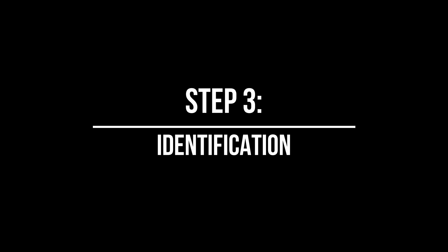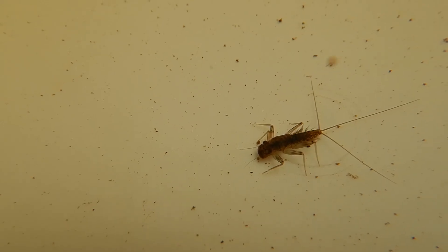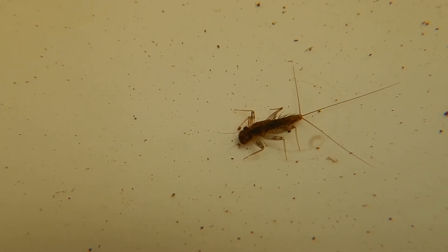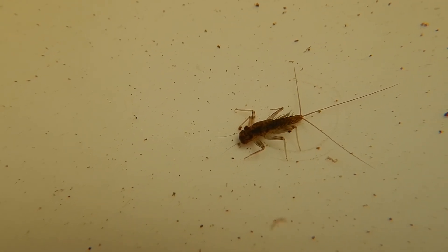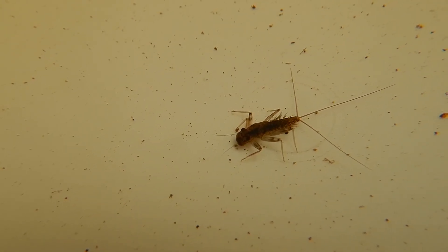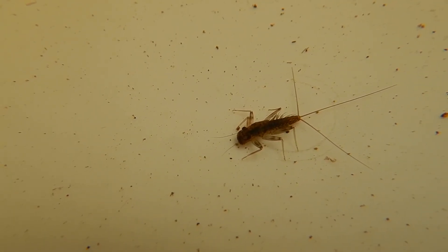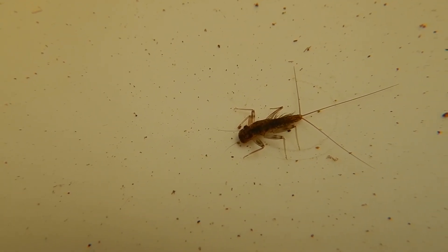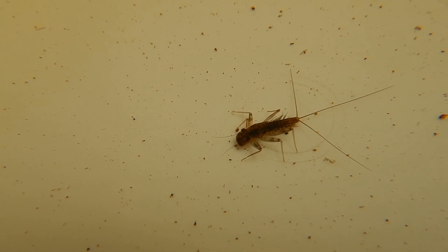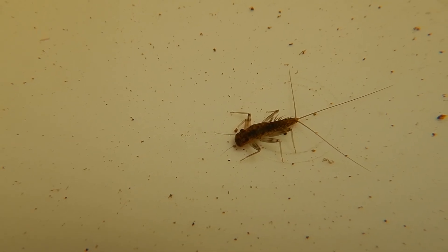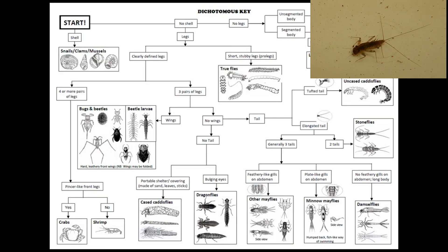Step 3: Identification. Now that we have our specimens, it is time to identify them. Select an invertebrate — for our purposes, we will be looking at this little one. Now, take out your dichotomous key and let's get started.